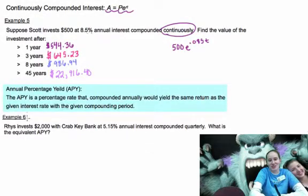Annual percentage yield, sorry that's misspelled, is the percentage rate that if you compounded annually would yield the same return as the given interest rate with the given compounding period.